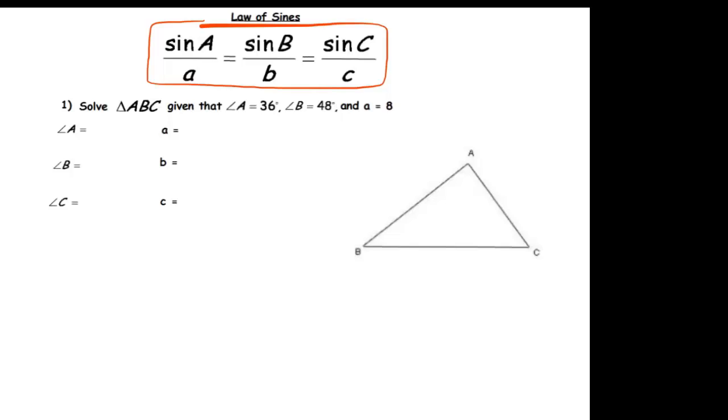Now before we do this example, just a convention. Remember that in a triangle capital letters always stand for the angles. Lower case letters stand for the sides. And the way that you determine what the sides are once the angles are labeled is opposite angle A is always side A, opposite angle B is always side B, and opposite angle C is always side C. Alright, so that's a convention that will never change.